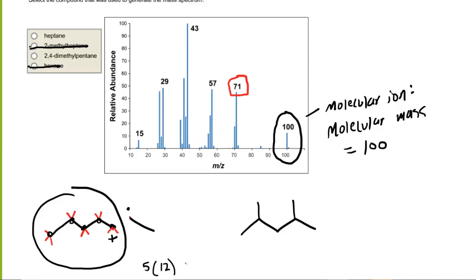So 5 multiplied by 12 for the carbons, and then add up the number of hydrogens, so 1, 2, 3, 4, 5, 6, 7, 8, 9, 10, 11. So 60 plus 11 is 71. So there is a way to fragment heptane to generate a fragment whose mass is 71 atomic mass units. So this is looking very good for heptane as being the correct answer.